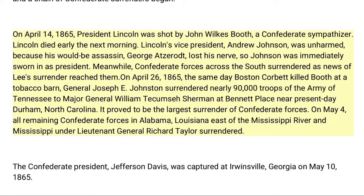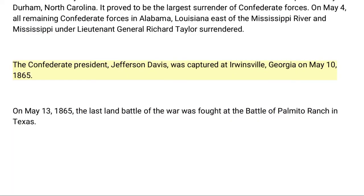It proved to be the largest surrender of Confederate forces. On May 4th, all remaining Confederate forces in Alabama, Louisiana east of the Mississippi River, and Mississippi, under Lieutenant General Richard Taylor, surrendered. The Confederate President Jefferson Davis was captured at Irwinsville, Georgia on May 10, 1865. On May 13, 1865, the last land battle of the war was fought at the Battle of Palmito Ranch in Texas.